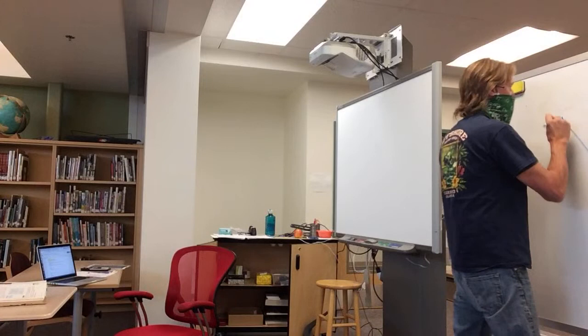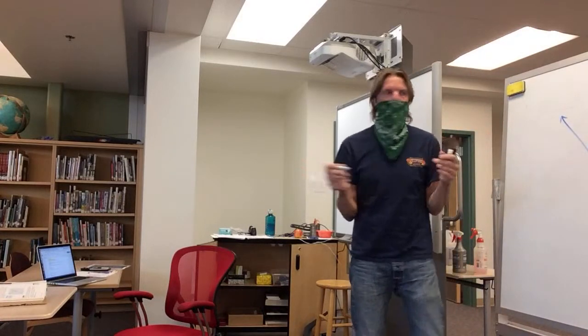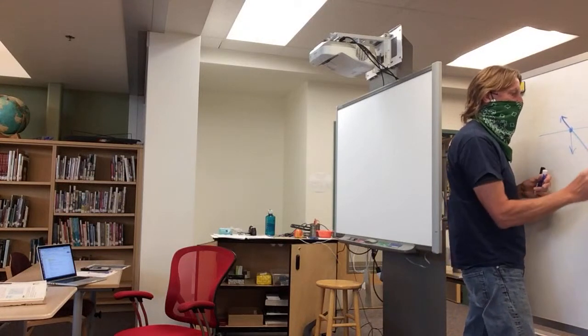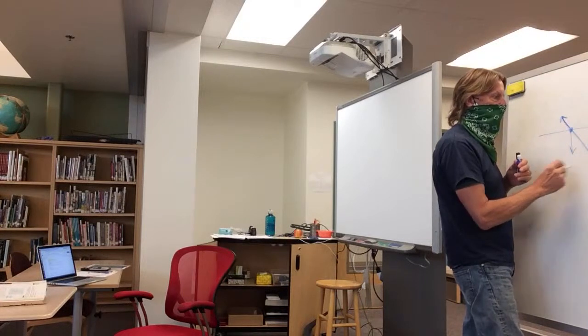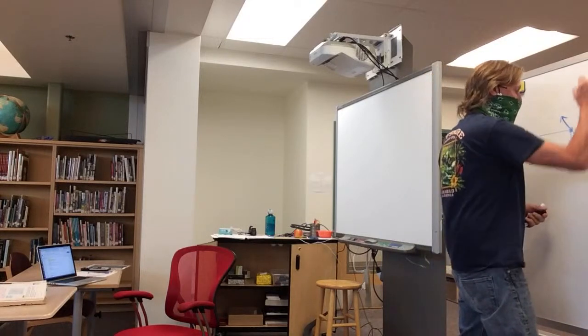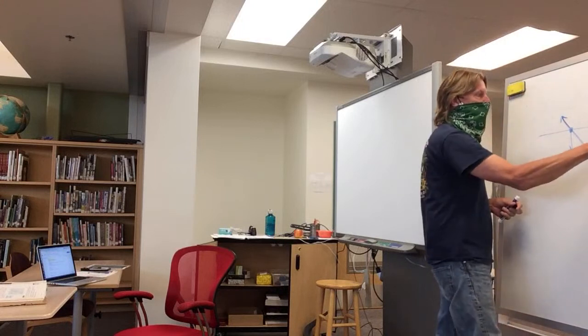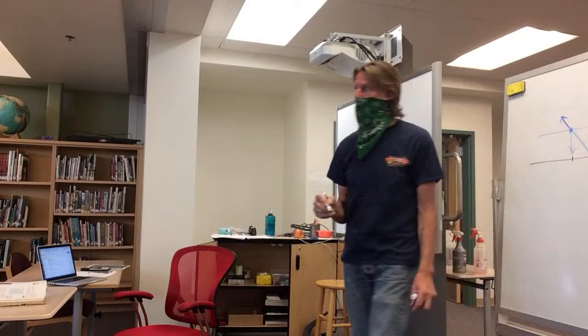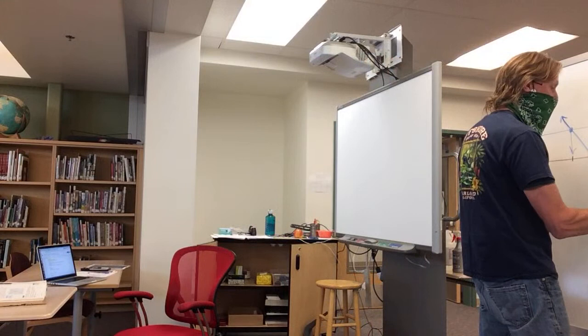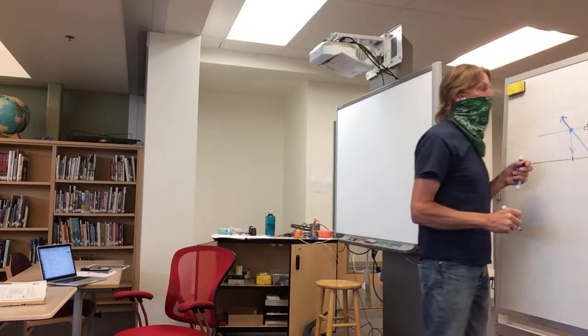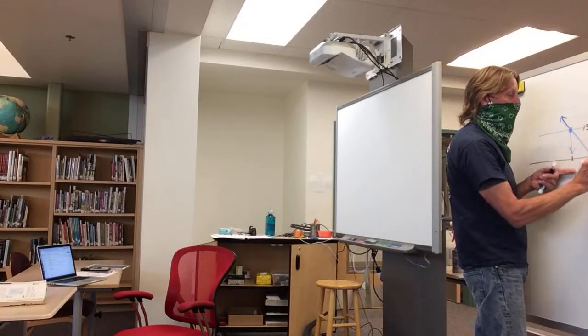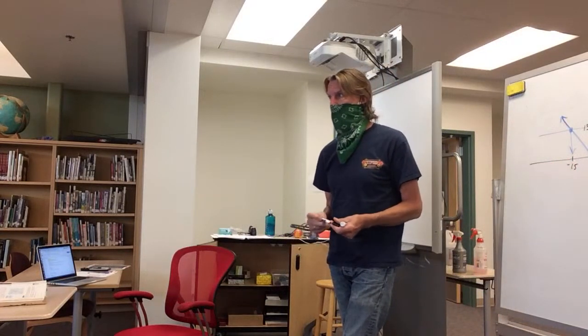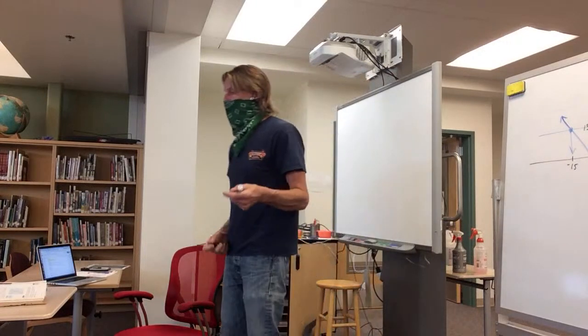If I graph any absolute value, it looks like this. Anything that has absolute value gives us this V-shape. Here's the y-axis, here's the x-axis. These are values of y, which are outputs, and they come from some number down here and some number down here. When we say that the absolute value of a number is equal to 15, this is 15. To get here we could get there by using x is equal to positive 15 or x is equal to negative 15.